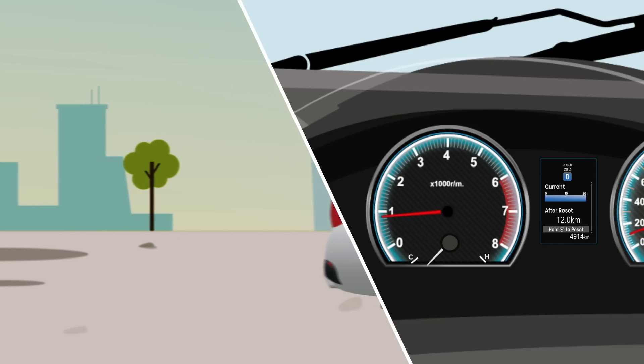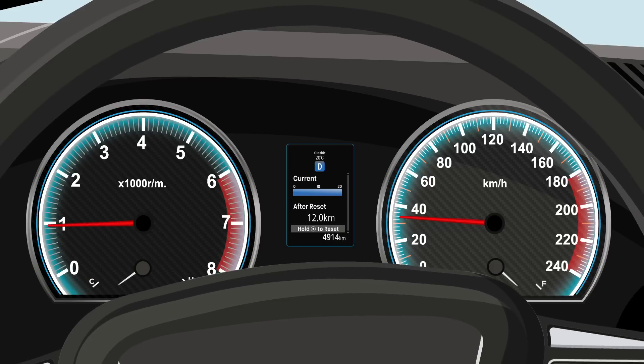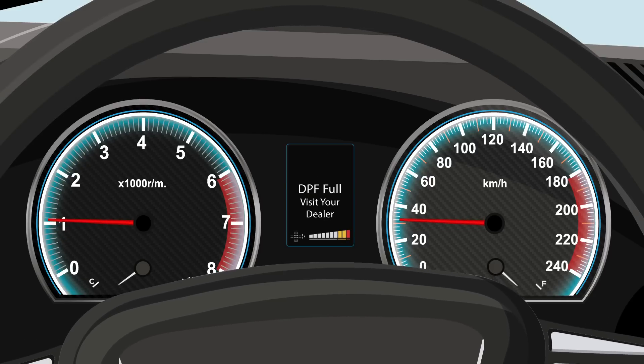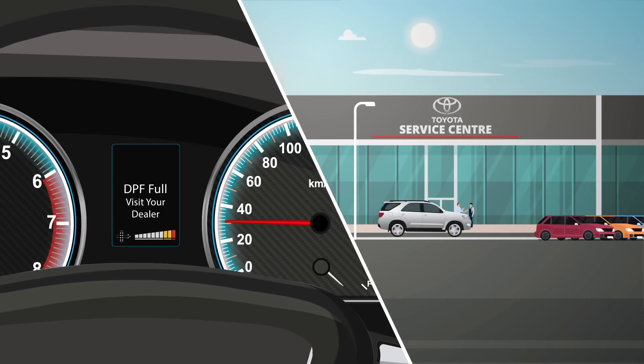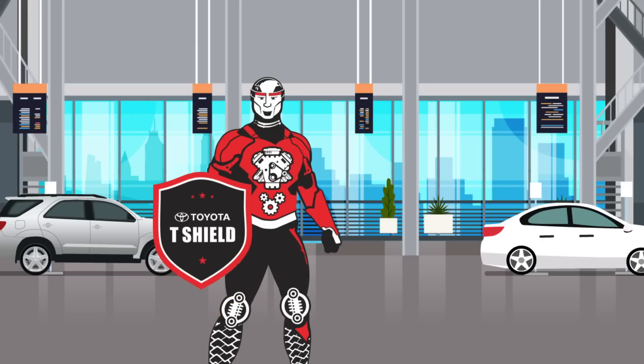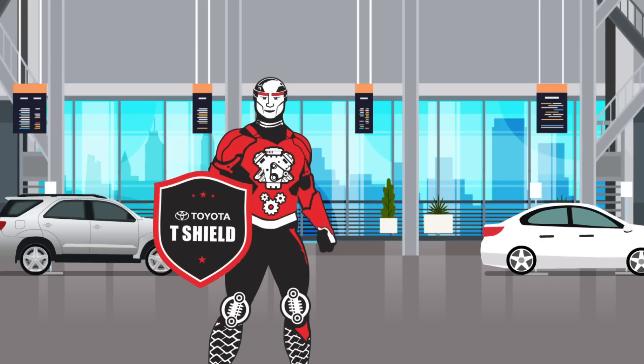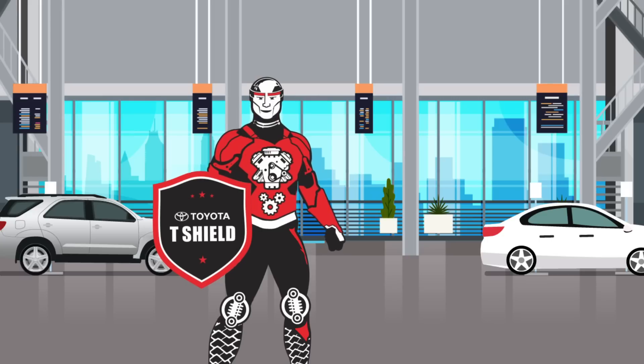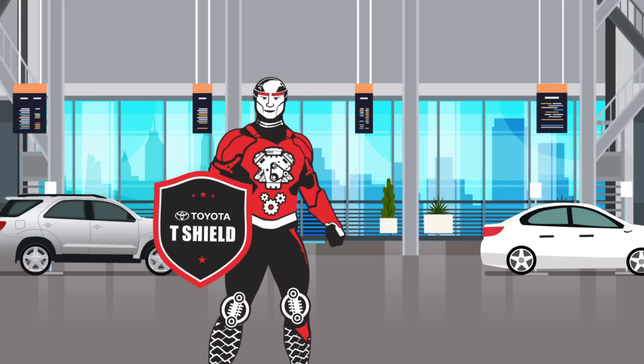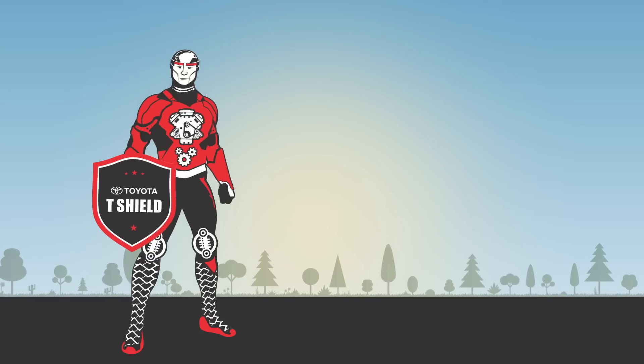However, if the DPF full, visit your dealer message continues to appear on the display, have your car immediately inspected at the nearest Toyota dealer. I am here to educate you and enable you to handle your day-to-day tasks of your vehicle. To ensure that your vehicle is running smoothly, have a happy and eco-friendly drive with BS 6 cars.